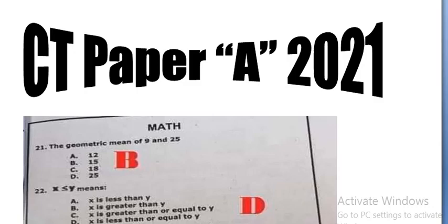The geometric mean of 9 and 25 is 15, option B. X less than or equal to Y means x is less than or equal to y, option D.